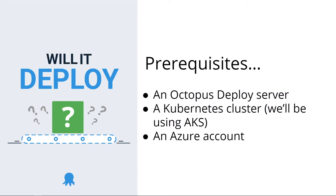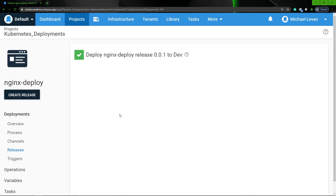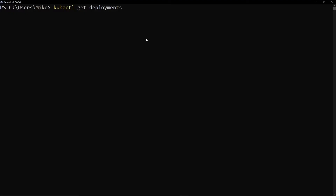There are a few prerequisites and what you're gonna need to follow along. The first thing you're gonna need is an Octopus Deploy server. Then you're gonna need a Kubernetes cluster — we will be using AKS, Azure Kubernetes Services. But if you have another Kubernetes cluster, you can absolutely use it as well. And finally, we're gonna use an Azure account. So what we're gonna be looking at in this video is how to take an NGINX image and deploy it via Octopus Deploy so we can get our application up and running on an AKS cluster.